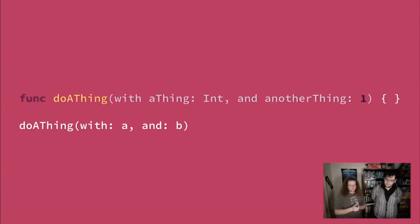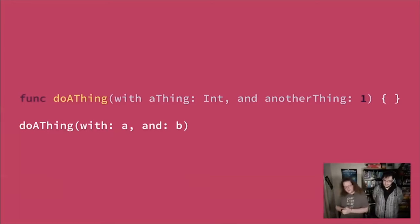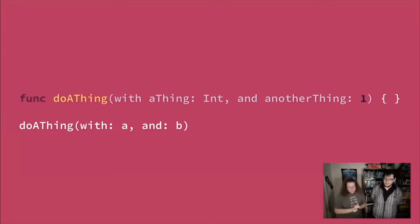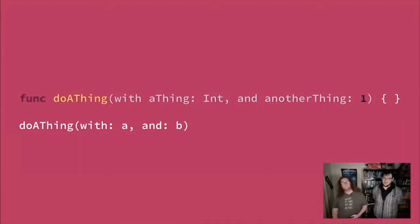Another interesting thing Swift does: I've written a quick function called 'do a thing with a thing and another thing.' This is one of those opinionated things that people tend to get a bit angry about when first exposed to it, but most people end up preferring it over time. Parameter labels are required. The function 'do a thing with a and b' would be different from 'do a thing a, b' — they'd be different functions. The goal is again that locality of reasoning.